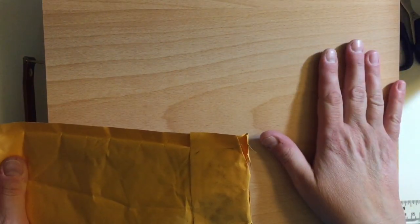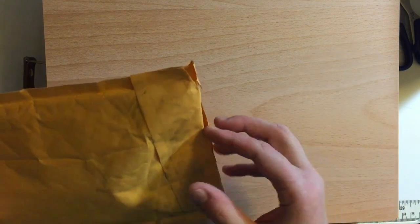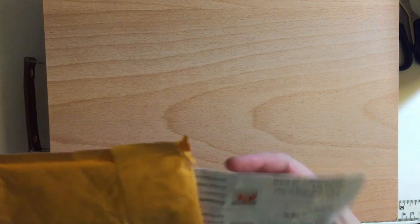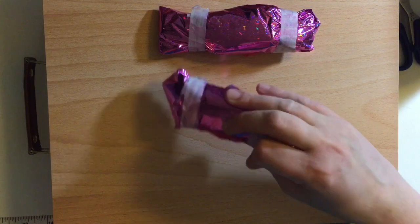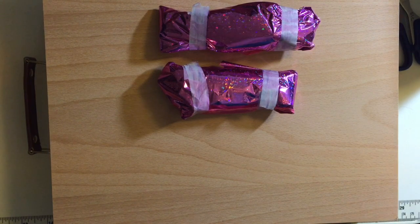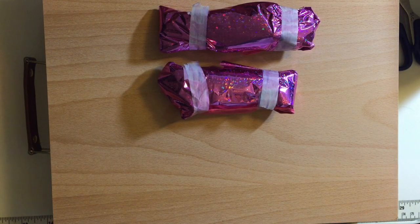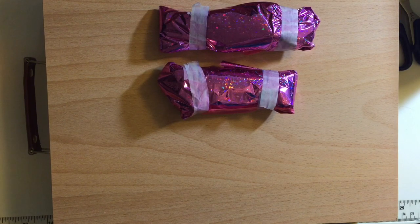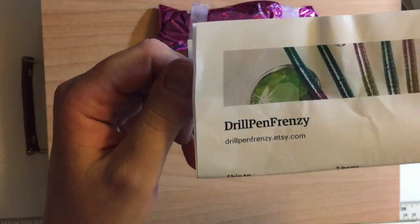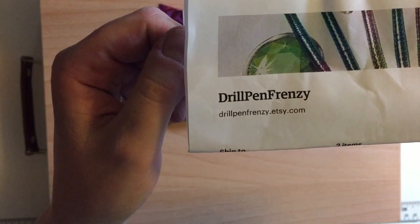Oh, and I apologize, I forget Donnie's Etsy store's name. I'll have to look it up and insert a little text area with the name in there. Okay, the Etsy store name is Drill Pen Frenzy. You can read that, and hopefully it's not too blurry. It is Drill Pen Frenzy at Etsy dot com.